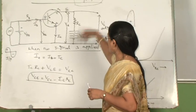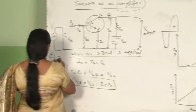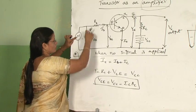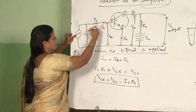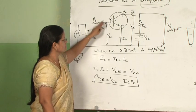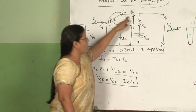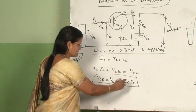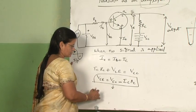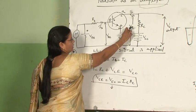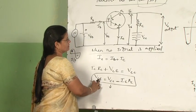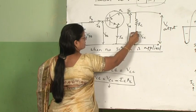During the positive half cycle of the input signal, when the positive half cycle is superimposed on VBB — this being positive for forward biasing — the effective input voltage increases. When the effective input voltage increases, input current increases, and output current IC also increases. When IC increases, referring back to the equation VCE = VCC − ICRC, VCE decreases. So the output voltage V0 decreases during the positive half cycle of the input.